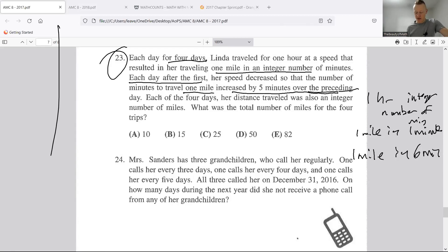If it was one, the next day would be six, the next day eleven, the next day sixteen. Each of the four days her distance traveled was also an integer number of miles. What was the total number of miles for the four trips? The amount of distance she traveled is not the same each day, so you should not assume it.